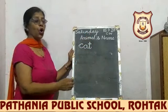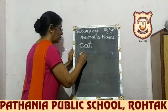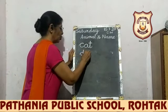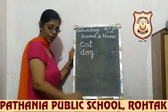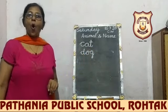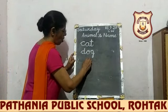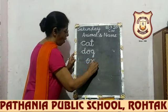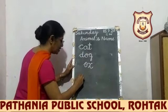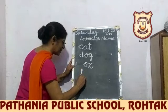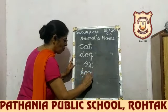Next is dog. Dog. And next is ox. Ox. One more magic is there: if we add F, it becomes fox. Fox.